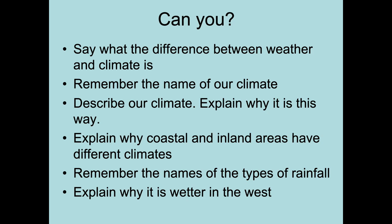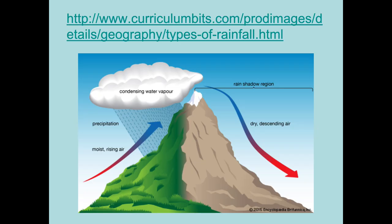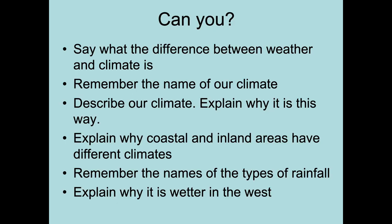There are three types of rainfall. Relief rainfall we've talked about today. Frontal rainfall will come up in future videos. Convectional rainfall is to do with heat — we don't get it very often in the UK because we're quite a long way from the equator so it's not hot very often. That's a bit of year one revision. Please go back, pause, and do what you need to do.